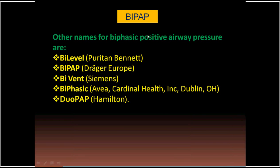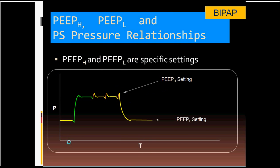BiPAP has different names among different machines: Bi-Level on Bennett, Bi-PAB on Rieger, Bi-Vent on Siemens, DuoPAP on Hamilton — something like that. But all of them have the same idea: a high level of CPAP and a low level of CPAP, with some differences in their device design.